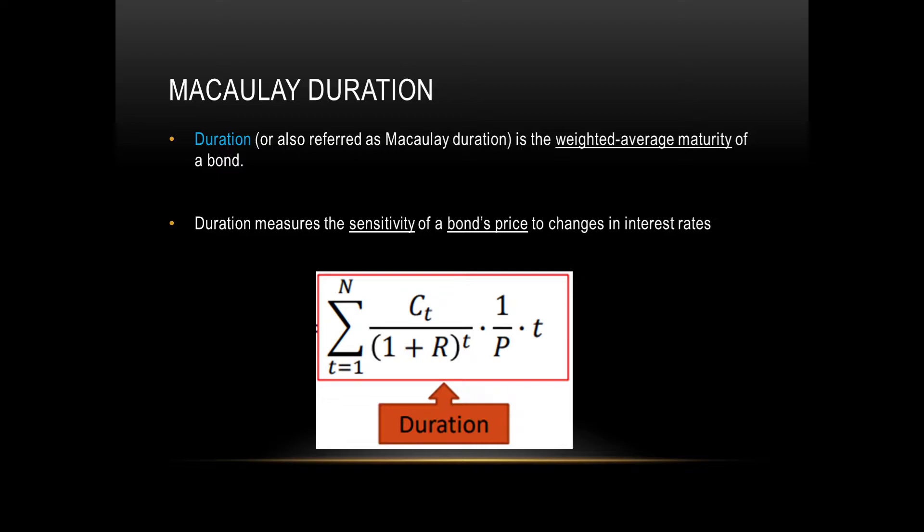And that's the formula below. Basically, the sum of all coupon payments over 1 plus yield to the power of t, which is your current time period, times 1 over P, which is bond price, times t.